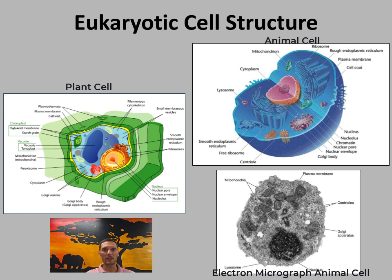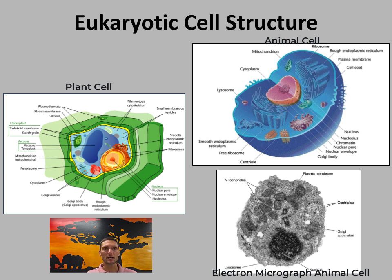The DNA within eukaryotes is linear — a double helix structure rather than a circular loop as seen in prokaryotes. It is arranged in beads within nucleosomes.